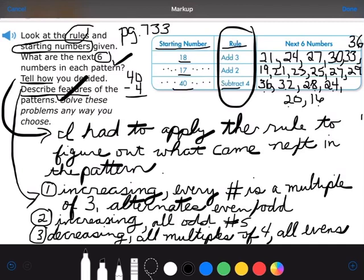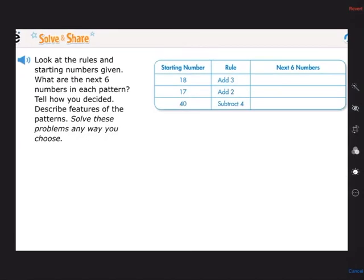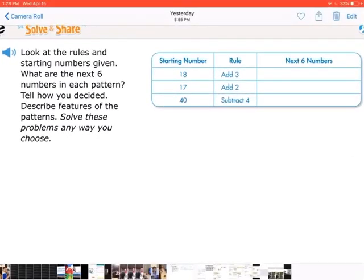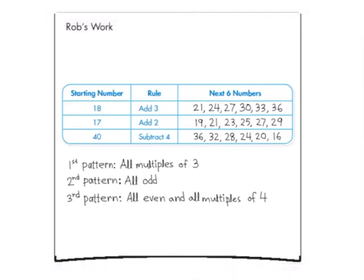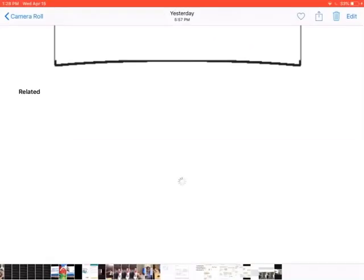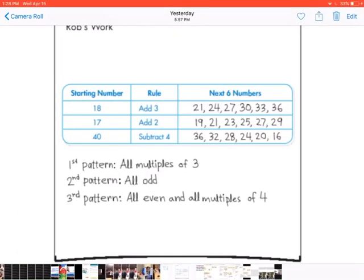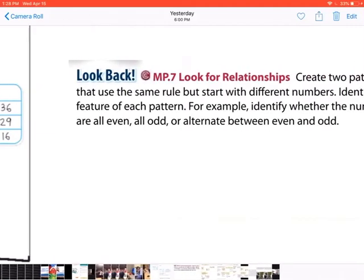So we're done describing features of the pattern. A sample problem shows the same answers: for the first pattern, all multiples of 3; for the second pattern, all odd; for the third pattern, all even and all multiples of 4. Good job, guys.